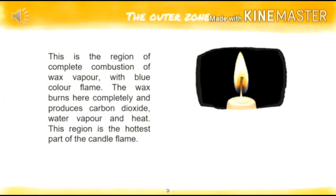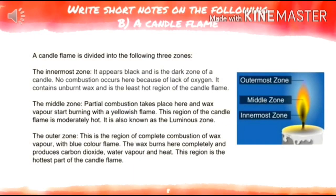The outer zone, or outermost zone, is the region of complete combustion of wax vapor with a blue color flame. The wax burns here completely and produces carbon dioxide, water vapor, and heat. This region is the hottest part of the candle flame, due to the complete combustion of wax vapors.